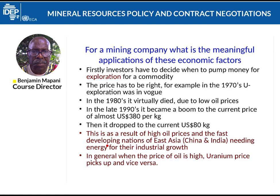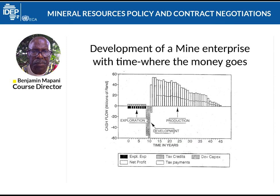When developing nations, especially in East Asia — China and India — wanted a lot of energy for their industrial growth, they turned to uranium as a substitute for oil. In general, when the price of oil is high, the uranium price picks up, and when the price of oil is low, the uranium price goes down. This is a classic case of one commodity determining the price of another.